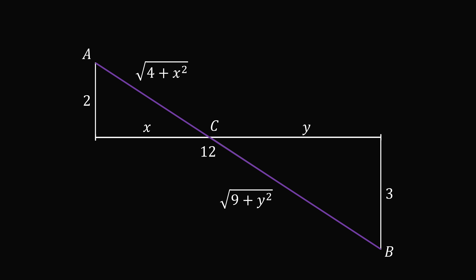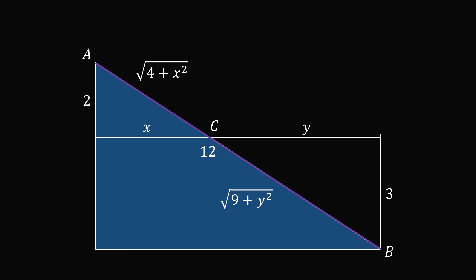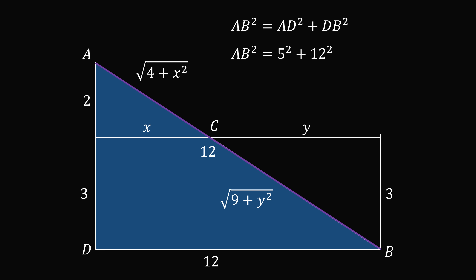To calculate this minimum length, we construct one more right triangle. Labeling the relevant corner as D, the segment AD equals 2 plus 3 equals 5, and DB equals 12. Using the Pythagorean theorem, AB squared equals AD squared plus DB squared, which is 5 squared plus 12 squared equals 25 plus 144 equals 169. Therefore AB equals 13. That's the minimum value of the sum of the square roots, and it's a lot easier than doing all those calculus calculations.